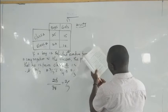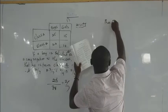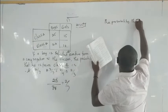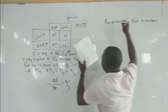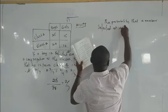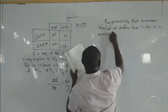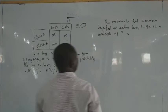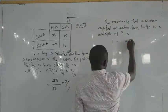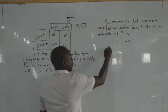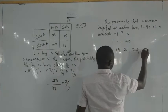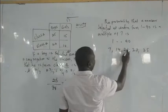The next question: what is the probability that a number selected at random from 1 to 14 is a multiple of 7? The multiples of 7 between 1 and 14 are: 7 and 14 — that is 2 numbers. The total numbers are 14. So the probability is 2 over 14, which equals 1 over 7.